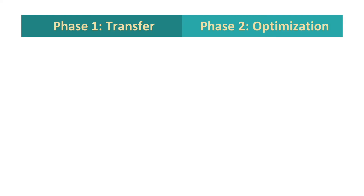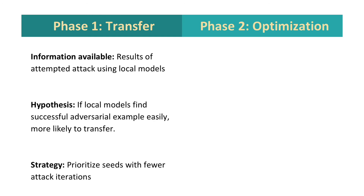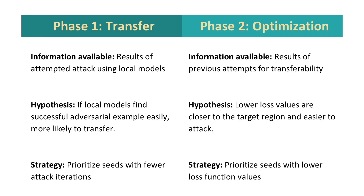To find those low cost images, we first check what information is available. In the hybrid attack's first phase, we do the transfer attack, so for each seed we know the corresponding number of local attack attempts. Our hypothesis is if we can find local adversarial examples easily, then those seeds are more likely to transfer to the target model. So we prioritize seeds that use fewer local attack iterations. In the second phase, we do optimization attacks for the failed transfers. Since we already queried each seed once, we know the loss function values with respect to the target model. Seeds with lower loss values are closer to the target region and easier to attack, so we prioritize those.